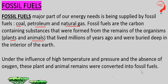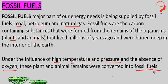Yeh fossil fuels kaise bante hain — jo remaining particles hoti hain organisms ki, like plants or animals ki, jo deep down bari ho jaate hain earth interiors mein, woh sab kaise fossil fuels banti hain? Woh sab high temperature, pressure, aur oxygen na mil paane ki wajah se — kyunki wahan pe carbon bahut zyada hai, oxygen nahi hai — interior of the earth mein, jiski wajah se jitne bhi plant or animal remains hote hain, woh sab fossil fuels ke form mein aa jaate hain.